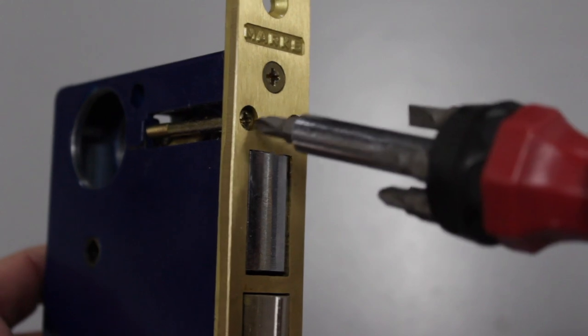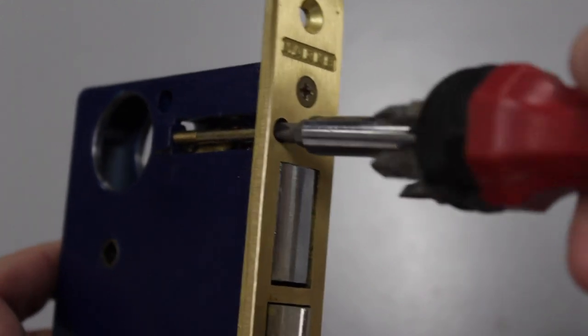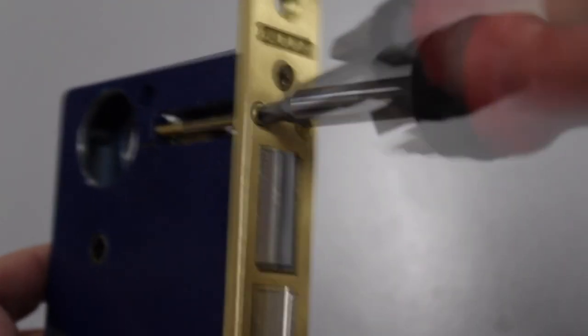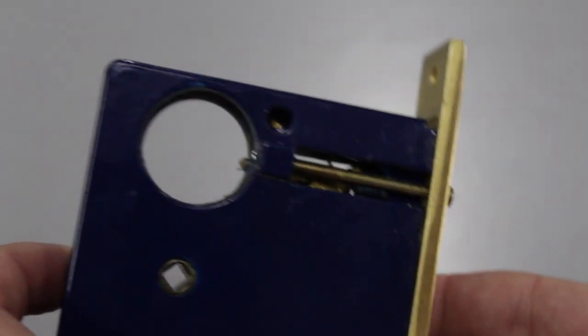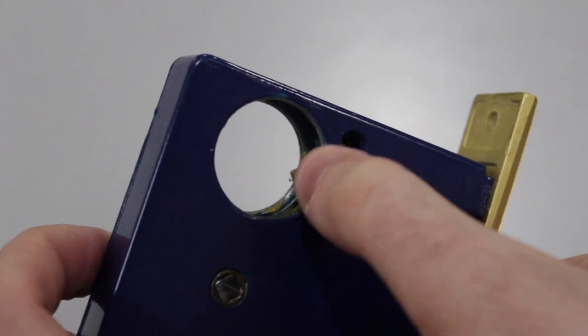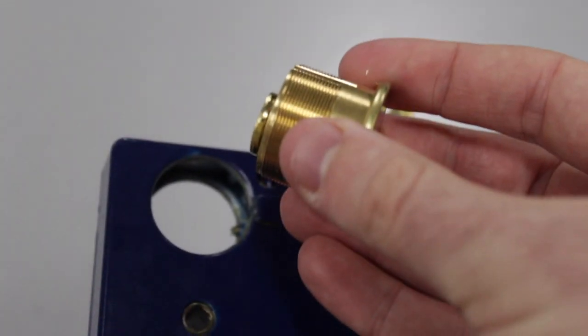Our lock set is shown out of the door for this demonstration. The first thing you should do is back the screw out of the lock set by unscrewing it slightly. This will get rid of the block and allow the key cylinder to thread into the lock set.